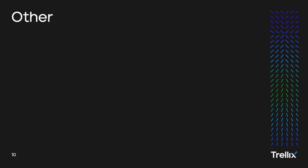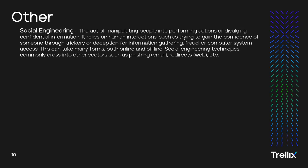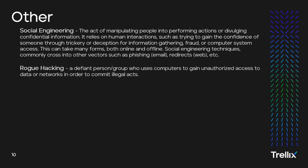Last but not least, let's look at other. The first is social engineering — the act of manipulating people into performing actions or divulging confidential information. It relies on human interaction, such as trying to gain confidence through trickery or deception for information gathering, fraud, or computer system access. This can take many forms, both online and offline. Social engineering techniques commonly cross into other vectors such as phishing, email, redirects, and web. Examples include spear phishing attacks with quid pro quo or pretexting. Last for our entry vectors is rogue hacking — a defiant person or group who uses computers to gain unauthorized access to data or networks to commit illegal acts, encompassing most vectors for hacktivism, notoriety, and/or financial gain.